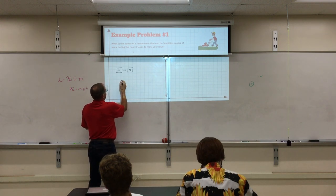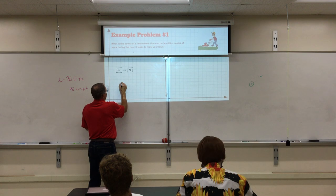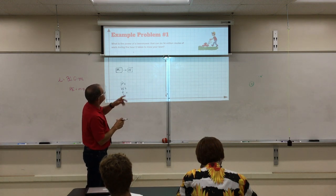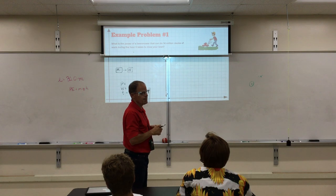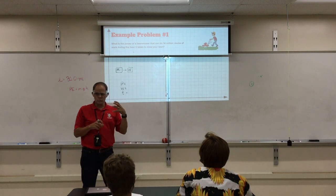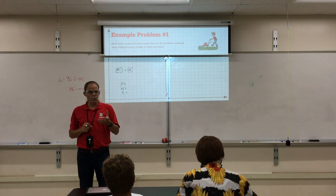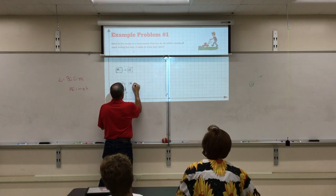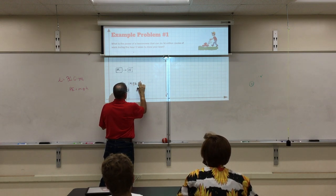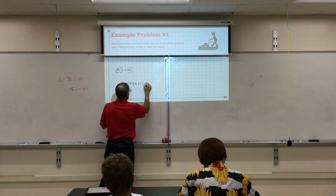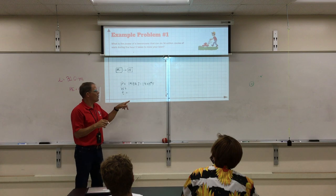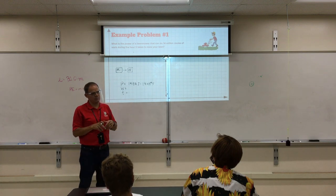The lawn mower is going along the level ground. But we have three things to worry about right now. We have the power, we have the energy transferred, and we have the time. So what is the 14 million joules? Joules is a unit of energy. So it's the work. It's the energy transfer. So this is 14 million, which I'm going to write as 14e to the 6th, which is also 14 times 10 to the 6th, which is also 1, 4, 0, 0, 0, 0, 0, 0. Okay?